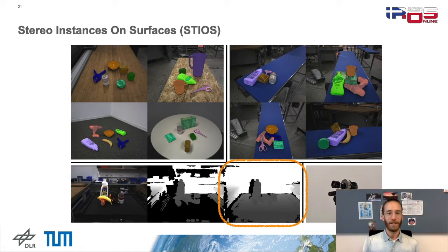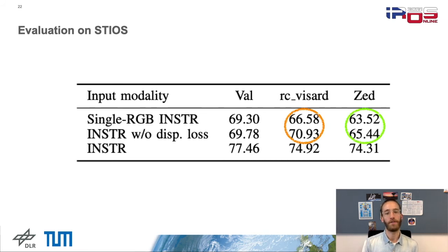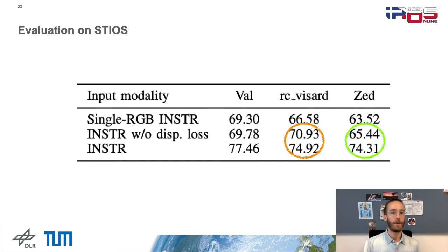Before looking at benchmarks, a small insight into the InSTAR results. We also trained one network with only RGB and one InSTAR version without the disparity loss. Interestingly, we achieve higher performance without the auxiliary task than the single RGB-based predictions, indicating a positive effect of the stereo approach in combination with the correlation. Including guidance in the form of the disparity loss leads to even better results.